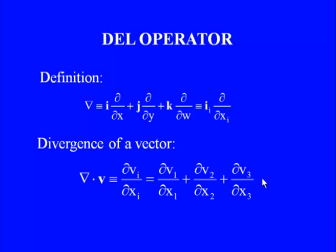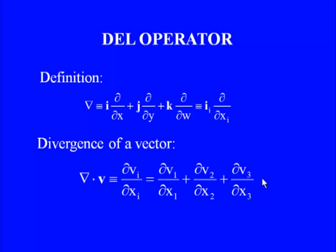The del operator is defined as ∇ = i·∂/∂x + j·∂/∂y + k·∂/∂z, written in indicial notation as i_i·∂/∂x_i. Taking the dot product of del with vector v gives divergence: ∇·v = ∂v_i/∂x_i = ∂v1/∂x1 + ∂v2/∂x2 + ∂v3/∂x3, where v1, v2, v3 are components of vector v in x1, x2, x3 directions respectively.